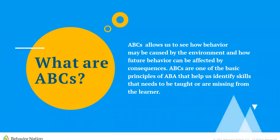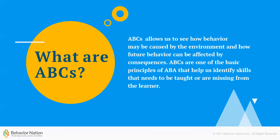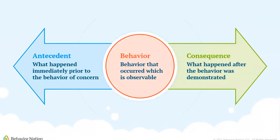First, let's define ABCs. ABCs allow us to see how behavior may be caused by the environment and how future behavior can be affected by consequences. Behavior is anything that can be measured or observed with the naked eye. Antecedent is what was happening immediately before the behavior, and the consequence is what happened immediately after the behavior.